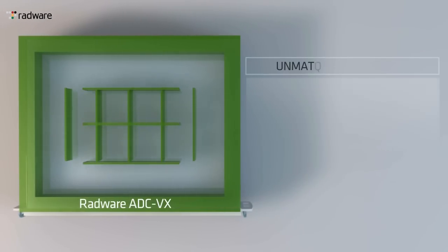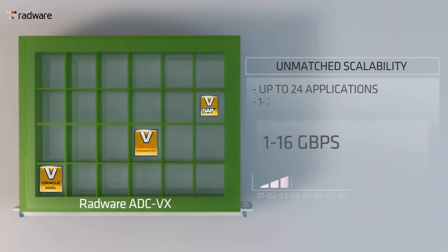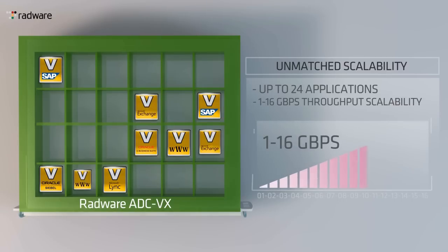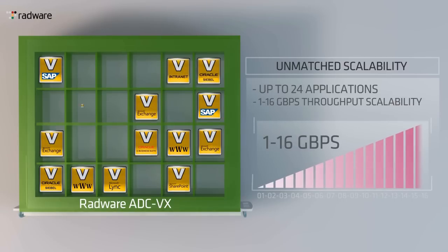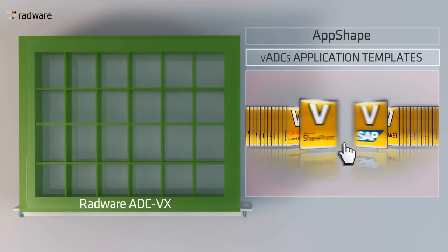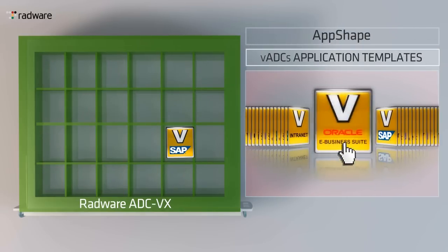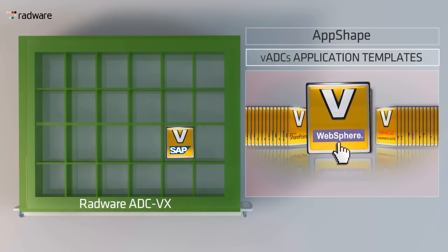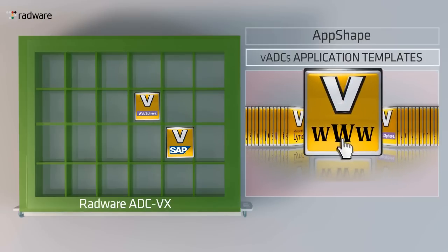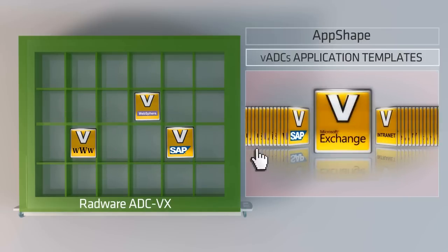Radware's on-demand strategy allows you to add new VADCs up to 24 applications and to scale the device's throughput up to 16 times to meet your future ADC needs without hardware replacement. To accelerate application rollout, Radware introduces AppShape, an application-centric management technology designed to expedite initial configuration and simplify application delivery operation for each application.